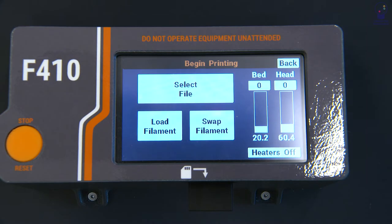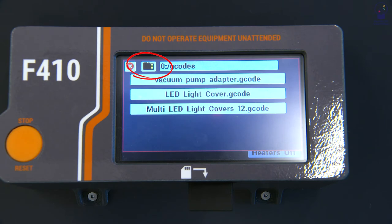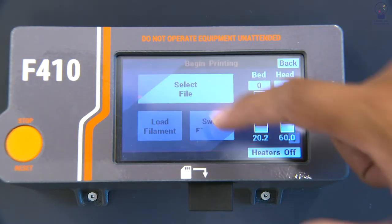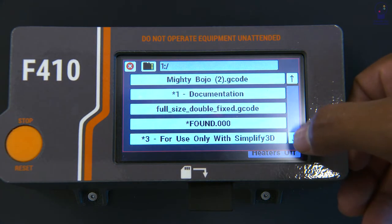On the home page of the screen, click Print, then Select File. Press the SD card icon to access your SD card and use the arrows to scroll through the files and select your print.